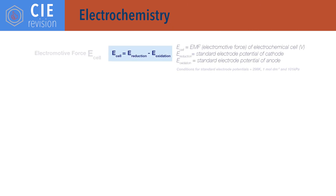For electrochemistry. E cell equals E reduction minus E oxidation, where E cell is the electromotive force or EMF of an electrochemical cell, E reduction is the standard electrode potential for the cathode, and E oxidation is the standard electrode potential for the anode. Conditions for standard electrode potentials are 298 kelvin, one mole per decimetre cubed concentration, and 101 kilopascals of pressure.